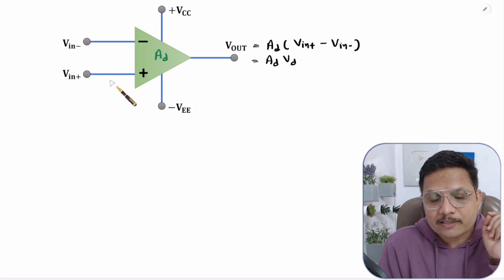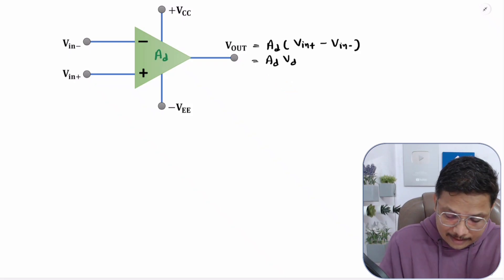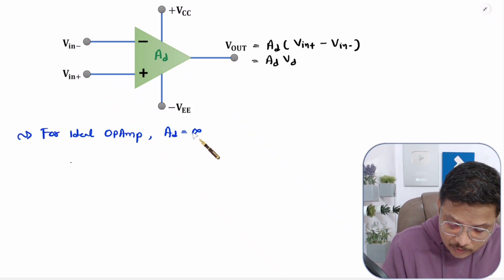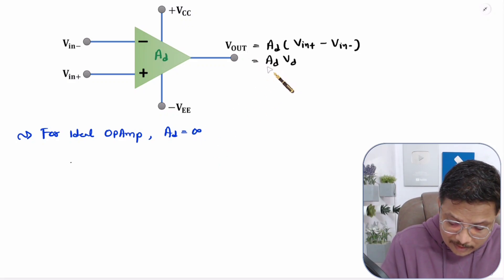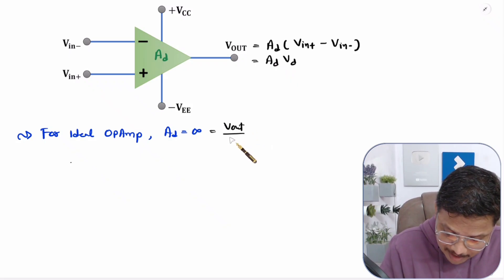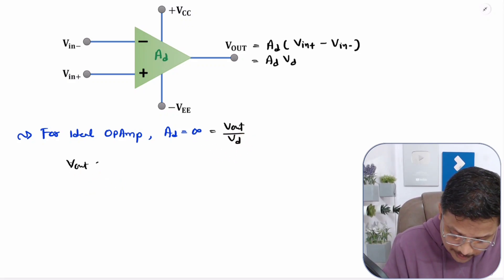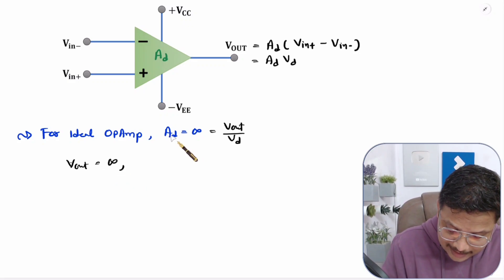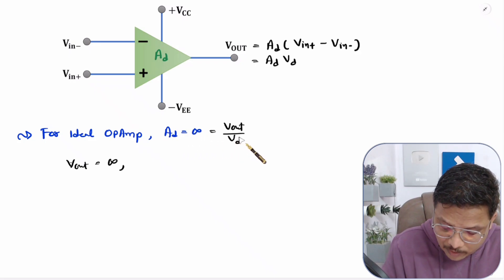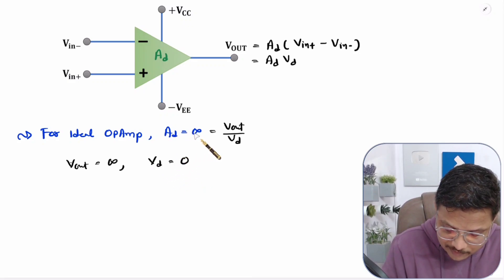Or you can say V out equals AD into V D, where V D is the differential input. With an ideal operational amplifier, this differential gain AD has to be infinite. To get AD equal to infinite, there are two cases. AD equals V out divided by V D. So to get AD equal to infinite, one way is to have V out equal to infinite, and the second way is to have V D equal to zero.